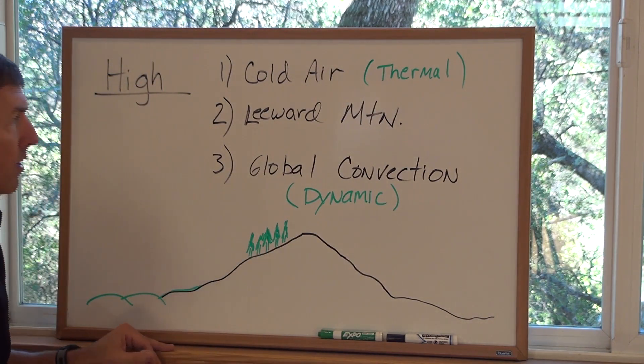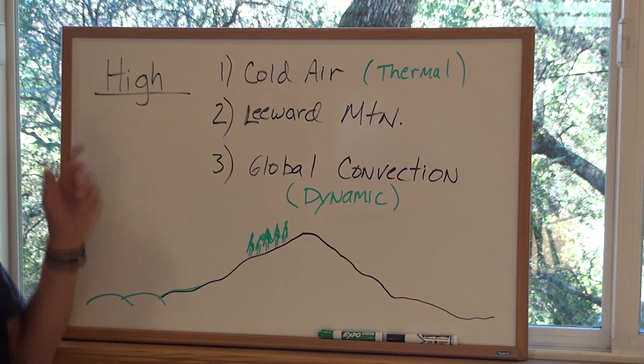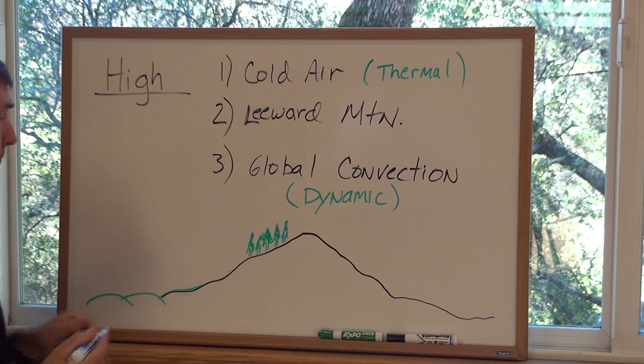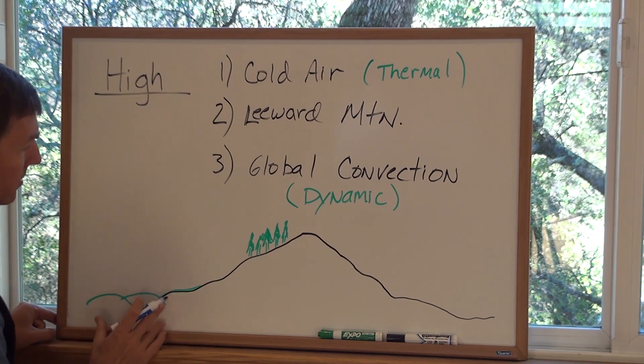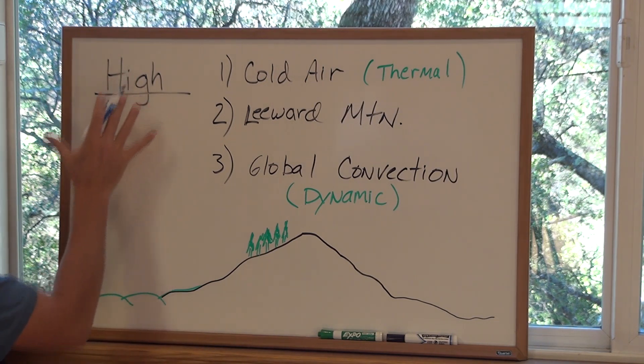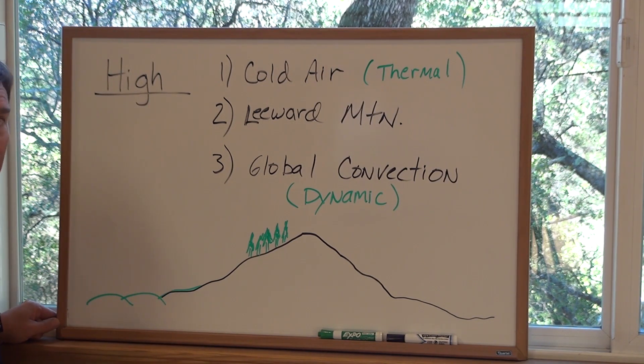Over here on the whiteboard I want to talk about specifically high pressure and what it is. So let's start with the basics again with just air molecules. At the surface of the earth, air is more dense. As you go up in elevation or altitude, it is less dense. That's the general rule, that's always the case.